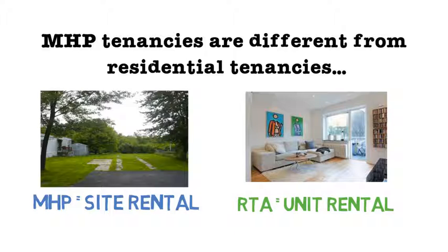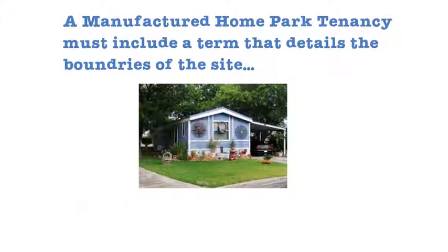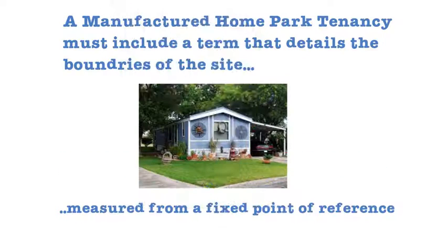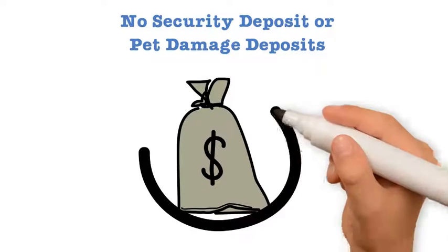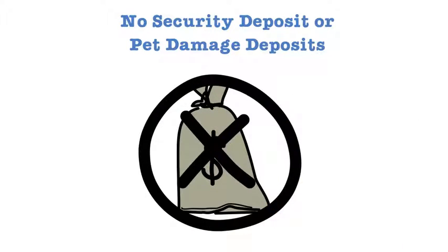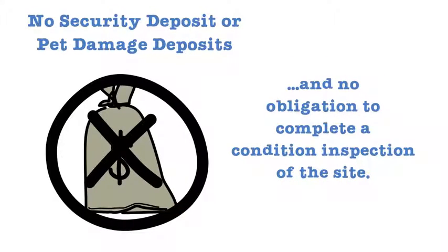A manufactured home park tenancy agreement must include a term that details the boundaries of the site, measured from a fixed point of reference. Manufactured home park landlords cannot ask for a security or pet damage deposit from tenants, meaning there is no obligation to complete a condition inspection of the site.